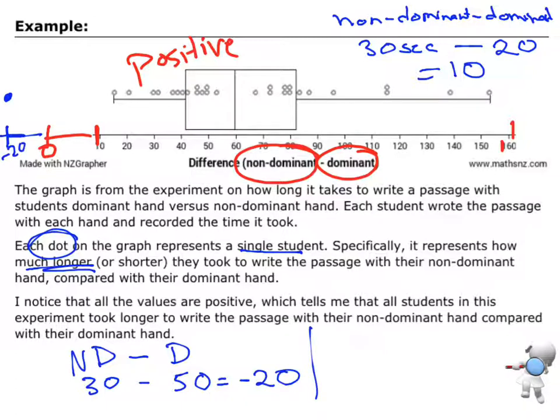The third type of scenario is what if they were the same time? So what if the time I took to write with my non-dominant and dominant were the same? 20 take away 20, that would give you a value of 0. So in that case, at 0, I would be putting in a dot there to represent they are the same times.